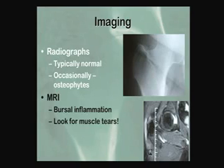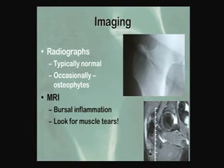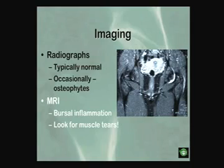On radiographs, here's an example of a huge bursa that was nearly missed — they didn't even include the relevant area, just a scout image. It's important to make sure your radiologist knows what you're looking for, because they'll miss obvious pathology like IT band issues, bursitis, or gluteus medius tears. You can sometimes pick up an osteophyte on the AP view, and I've seen a handful of patients with calcific tendinitis in that area, similar to the rotator cuff.